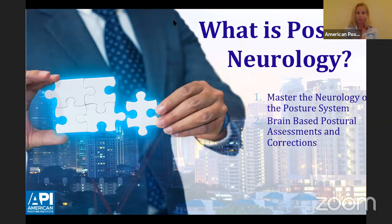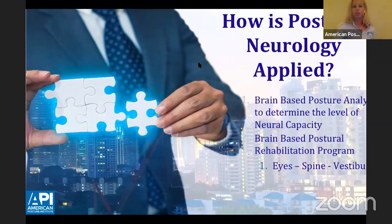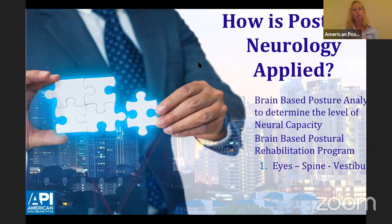With brain-based postural assessments and corrections, we want to identify where the origin of distortion is located within the brain — what part of your brain has a deficit or dysfunction creating a postural distortion pattern. Once we identify that, we set up a postural correction treatment plan to stimulate the brain for long-term results. You don't need fancy equipment, you don't have to spend hours per patient, and you don't need to memorize a bunch of facts and figures.